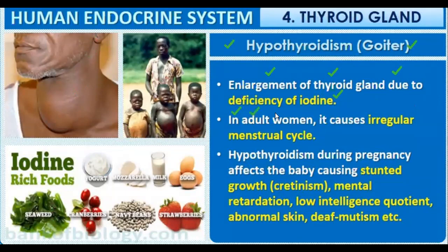Adults and women with hypothyroidism can experience an abnormal menstrual cycle. Hypothyroidism during pregnancy can affect the child's growth, leading to stunted growth — known as cretinism — mental retardation, low IQ in the baby, abnormal skin, and the child may be deaf or dumb, since metabolism is not regulated properly.